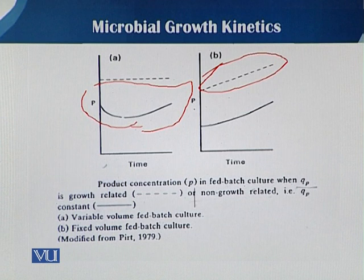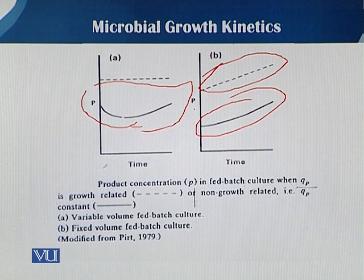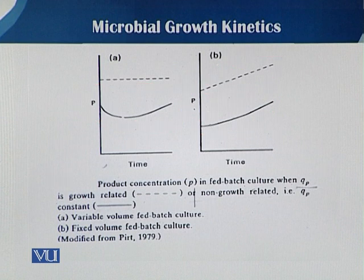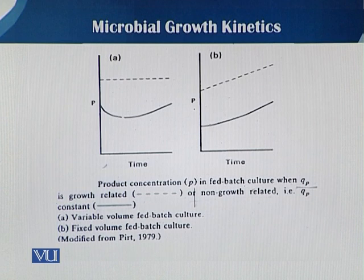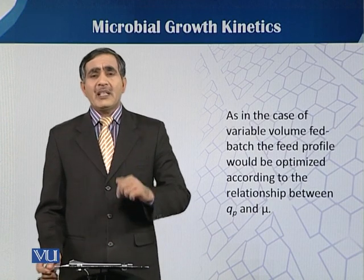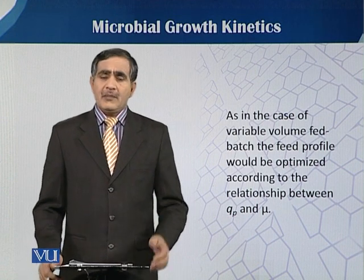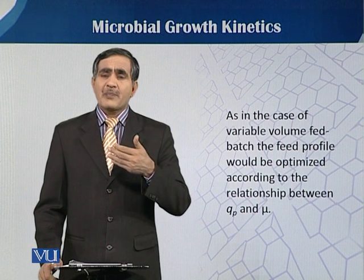Whether the product formation is growth related or not growth related, in both cases in fixed volume we have an increase or a linear relationship between product formation and rate of product formation during the fermentation process. These two diagrams show the relationship in fixed volume and variable volume with respect to secretions that become very toxic and have a very negative effect on mu, the specific growth rate.